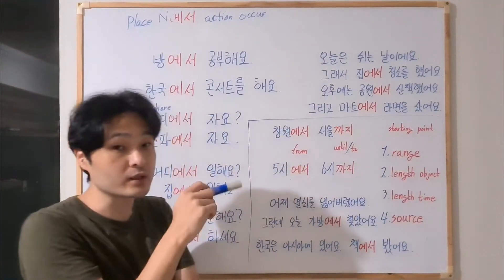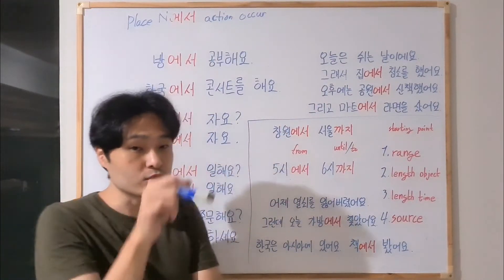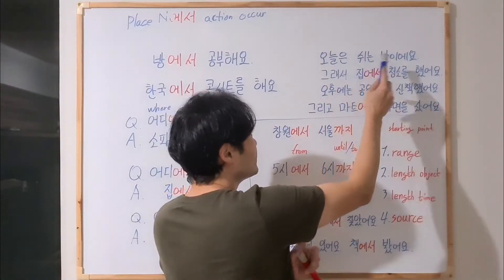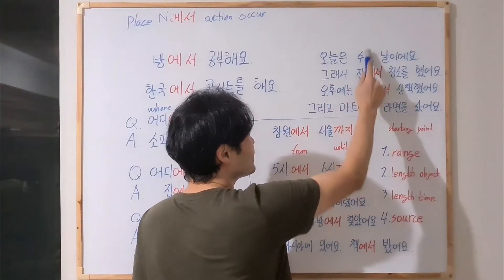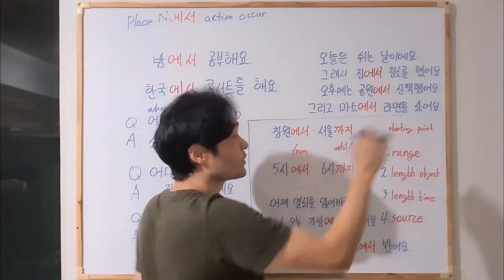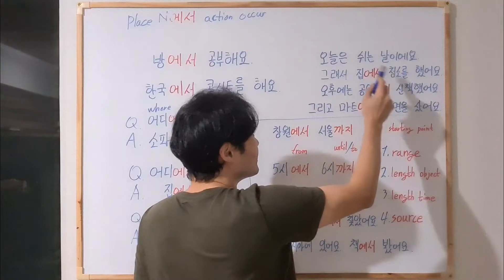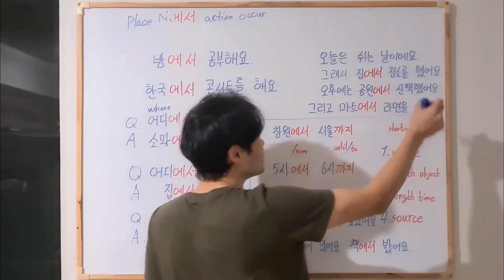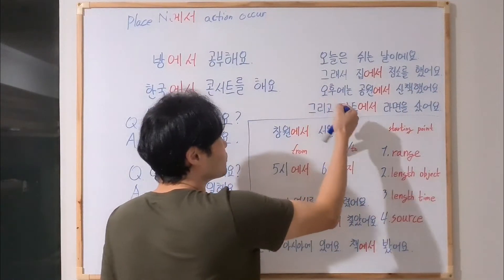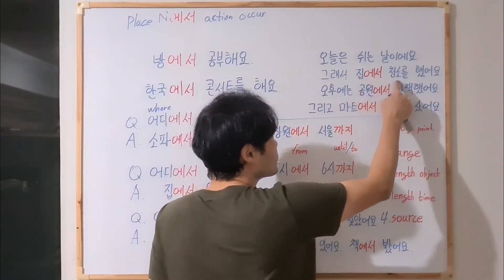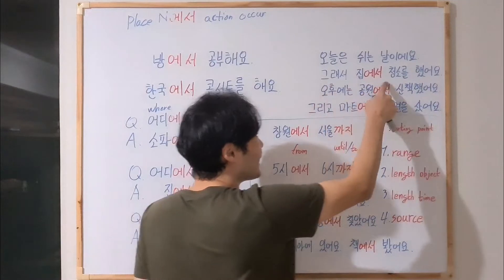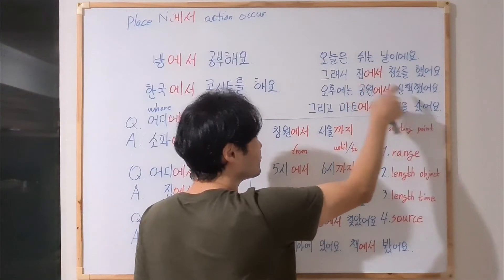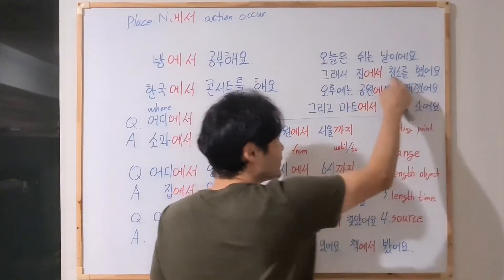This is also a good way to practice — like a short diary. 오늘은 쉬는 날이에요 — today is a day off. 쉬다 is the verb meaning 'to rest,' 날 is 'day,' so 쉬는 날 means 'day of rest.' 그래서 집에서 청소를 했어요 — so I cleaned at home. Home is the place where I cleaned.